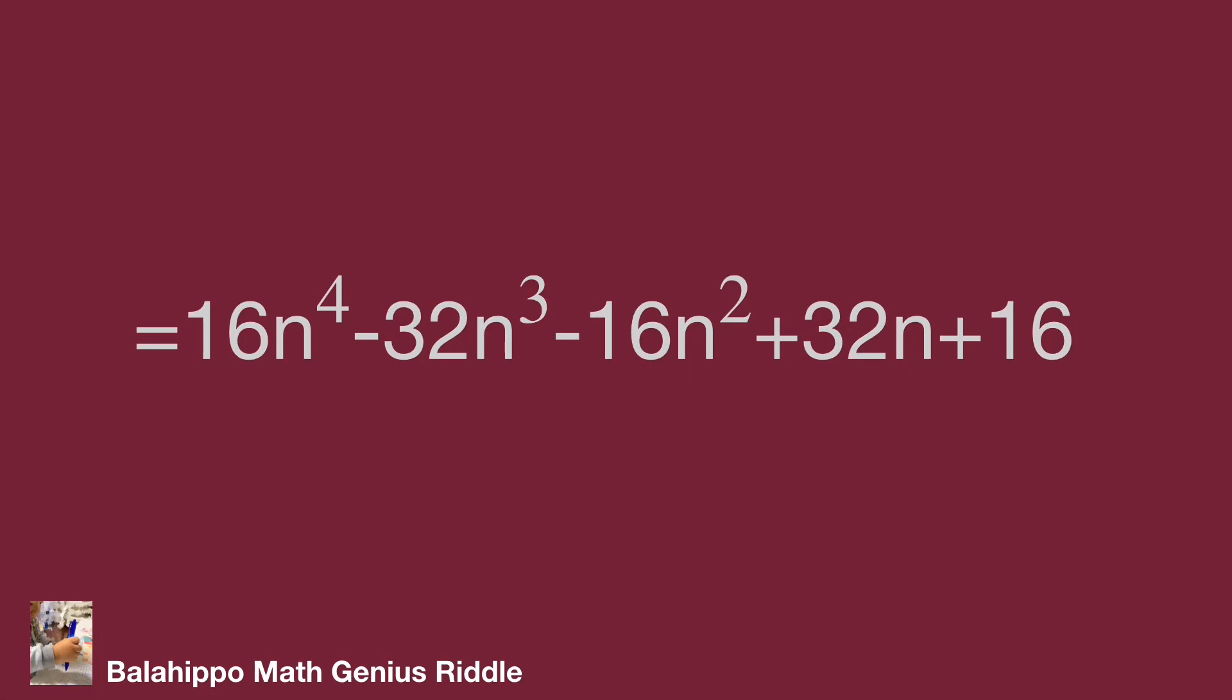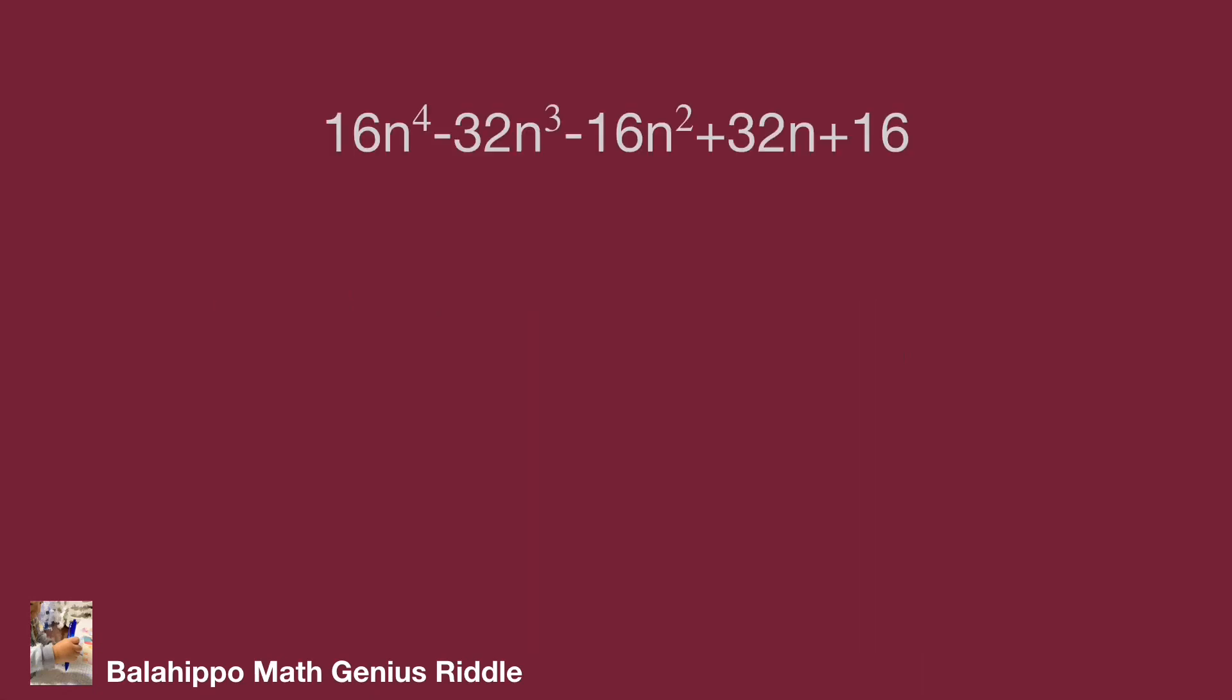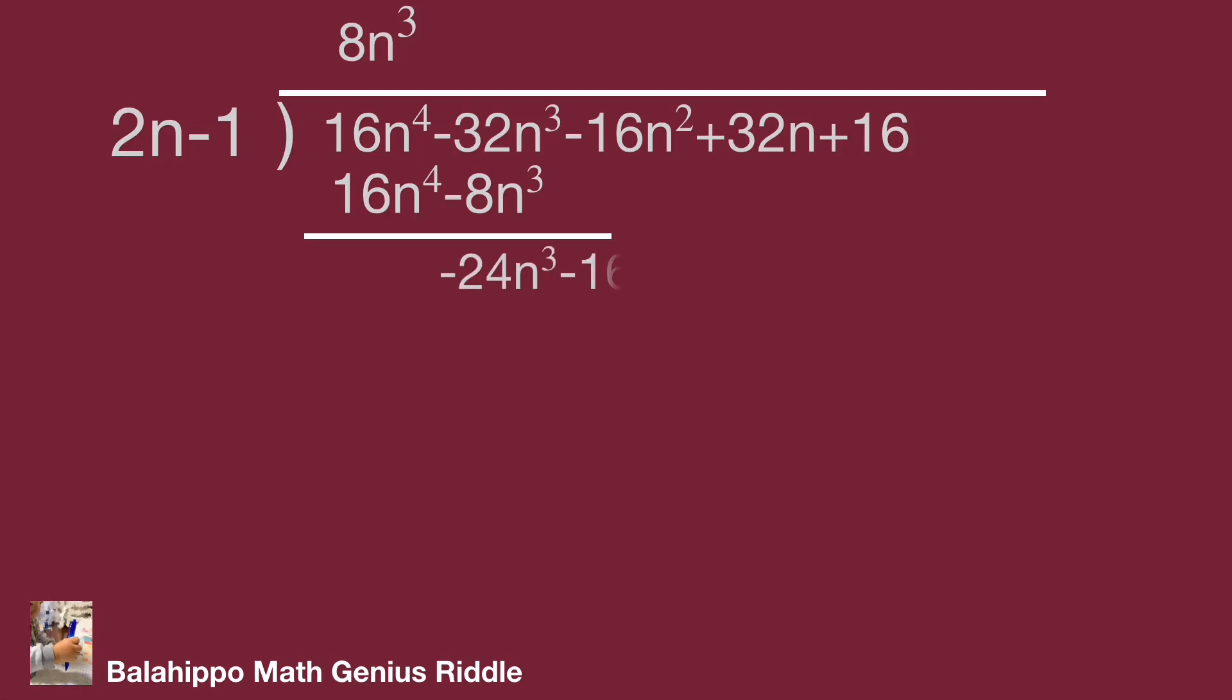Okay, I will apply the division method. Let this item divide by 2n minus 1. The quotient: 8n cubed times 2n minus 1 equals 16n to the 4th minus 8n cubed. Remainder: minus 24n cubed and the next item minus 16n squared.